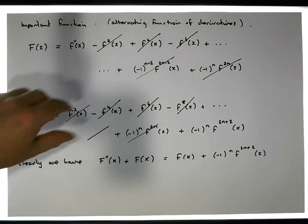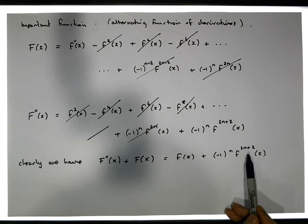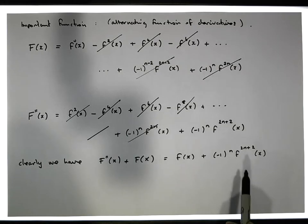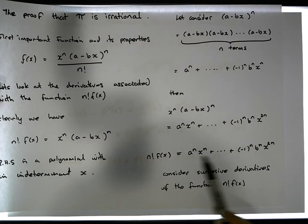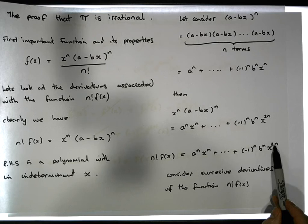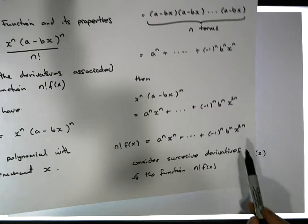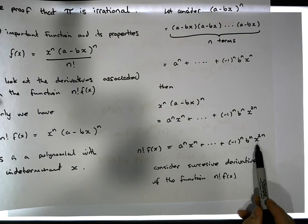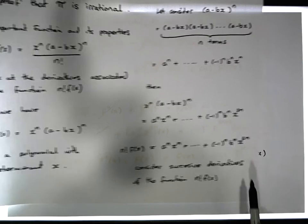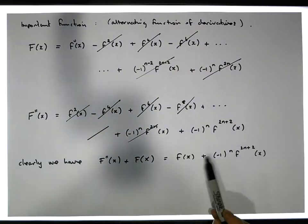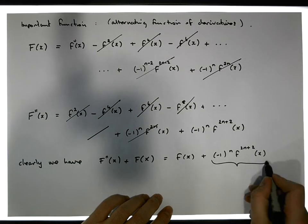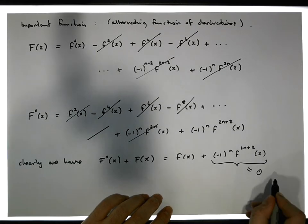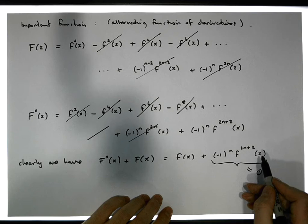Now don't forget — the highest indeterminate in our original function was x to the 2n. So I can differentiate this 2n times to bring it down to a constant. When I differentiate that constant again, it goes to zero. So this term here is actually equal to zero, because it was the second derivative of a constant.